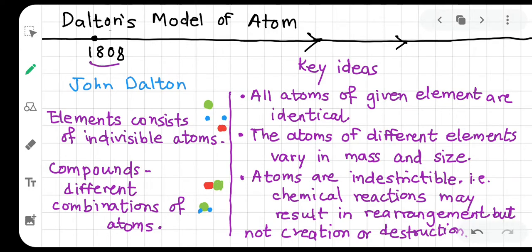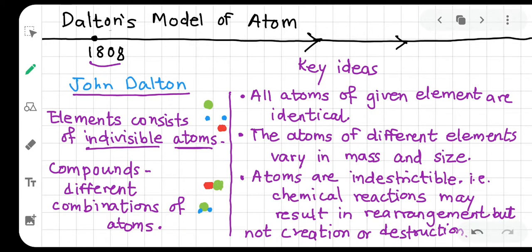Then in 1808, John Dalton — a British school teacher and thinker — did some experiments. He proposed that elements consist of indivisible atoms: the smallest particles of a material which cannot be divided any further.